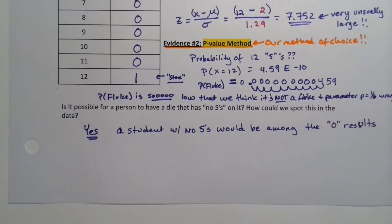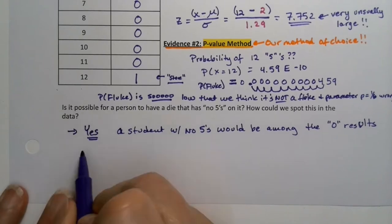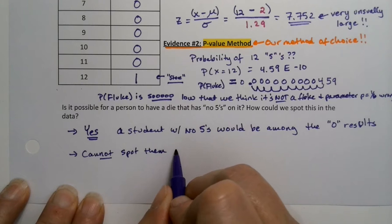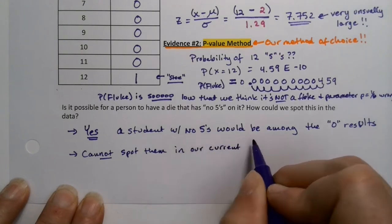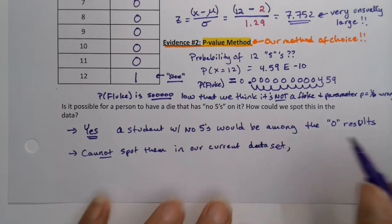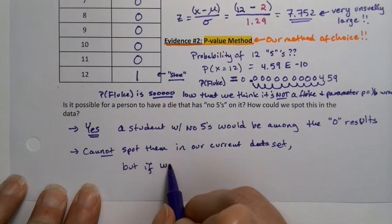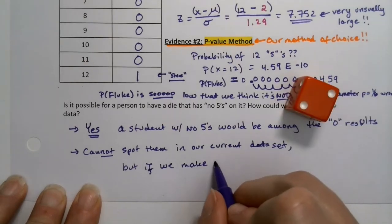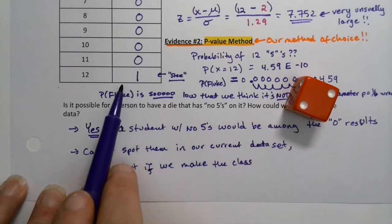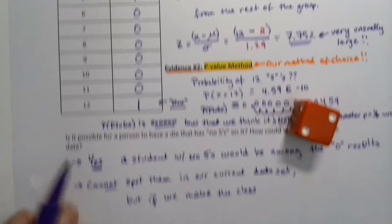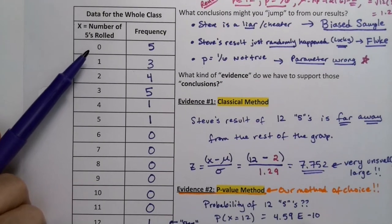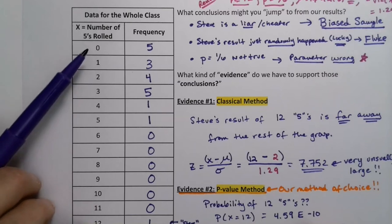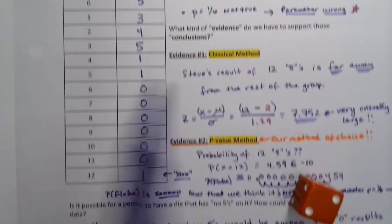Now how would we spot them? Well you actually can't spot them in our current data, but you could spot them if you made them roll more. If we make the class roll more then all the people that had no fives will eventually get a five except for whoever has this die because there's no fives to be had. Steve will be spotted from a mile away because even in a small data set you'll know that one's unusual, but this one is not unusual right now.